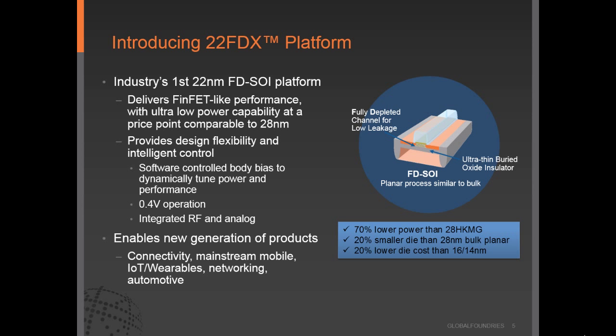On July 13th, Global Foundries introduced our 22FDX technology platform — the industry's very first 22 nanometer FDSOI platform. The 22 nanometer node selection allows for reuse of a production-proven 28 nanometer toolset. It minimizes the number of steps requiring double patterning to keep cost low, and it provides nearly 20 percent die scaling relative to the 28 nanometer node. In addition, the 22FDX technology provides a second-generation FDSOI transistor capable of providing nearly 70 percent lower power than 28 nanometer and comparable performance to a FinFET technology. The net message is 22FDX has FinFET-like performance at 22 nanometer cost.